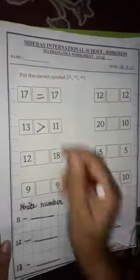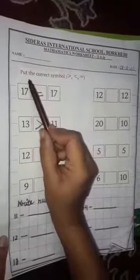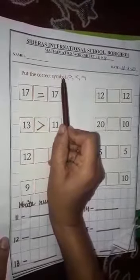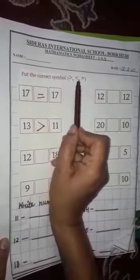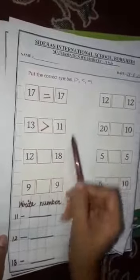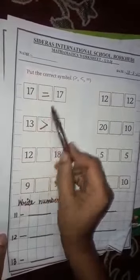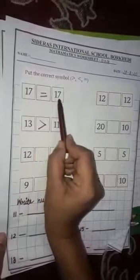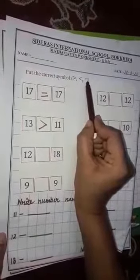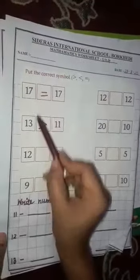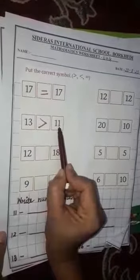I gave you one more worksheet. You have to put the sign in it. Put the correct symbol. You are very confused, so I have prepared a worksheet for you. What do you have to do? See this? They both are the same, so which sign? Equal.